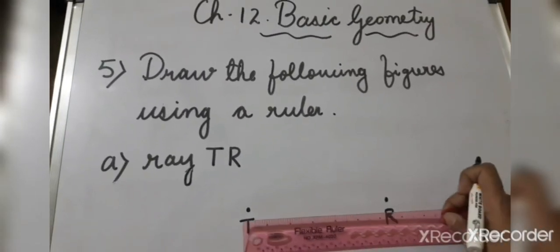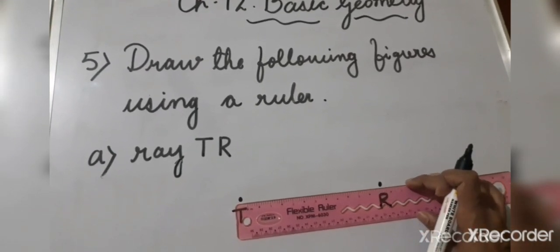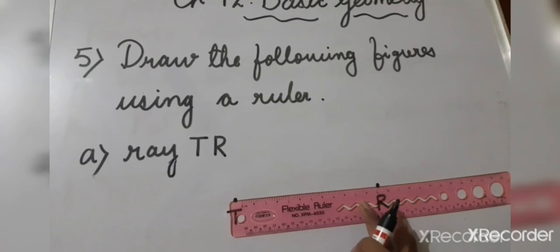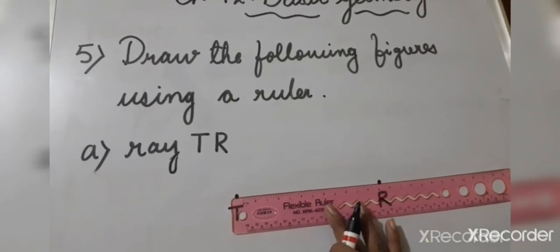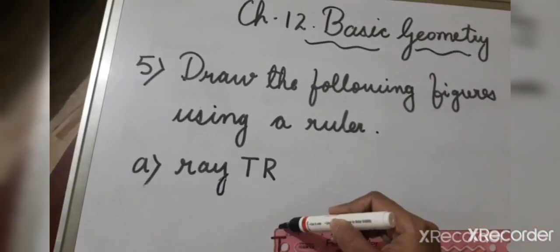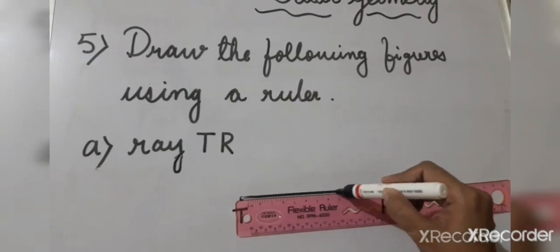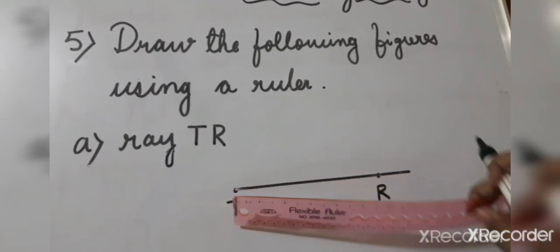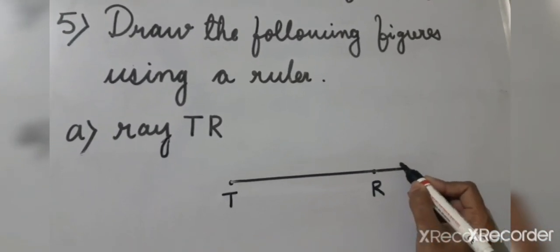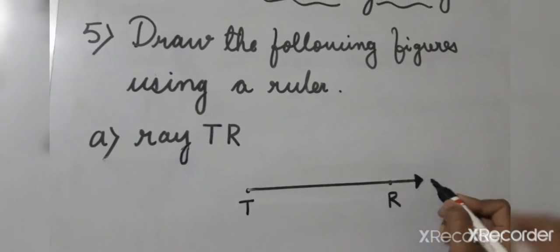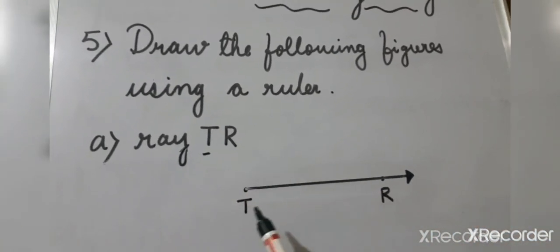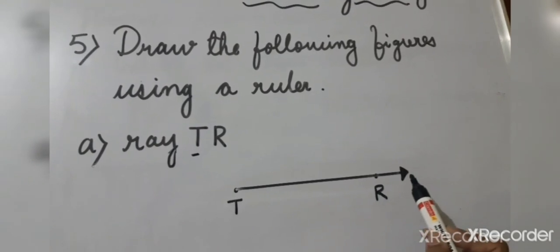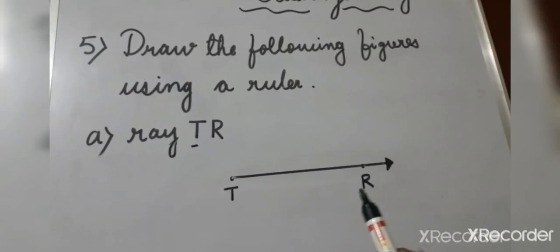With the help of your ruler, you will align these points where exactly they should meet each other. Both the points are aligned. Now, with the help of your pencil, you will join these points and extend it a little further because this is a ray. So we are going to put an arrow here. T is the endpoint, and we will extend it a little further and draw an arrow at the other side. In this way, you will draw this in your notebook as well.